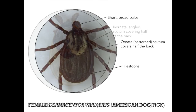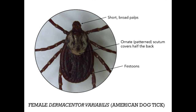The next photo is of a female Dermacentor variabilis, or the American dog tick. If you live out west, you might more commonly see the Rocky Mountain wood tick, Dermacentor andersoni. Both of these species appear very similar, but again we can differentiate them under a microscope. This tick species has short, broad palps, an ornate scutum — you can see this patterned scutum — and there are also festoons.